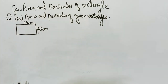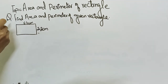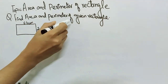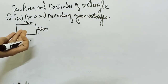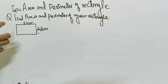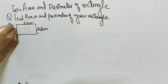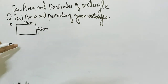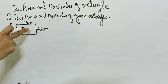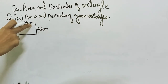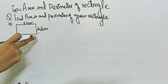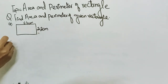Assalamualaikum students. Today's topic is area and perimeter. In this, we have to find the area and perimeter of a rectangle. For example, a rectangle is given with two sides: six point four centimeter and two point two centimeter.